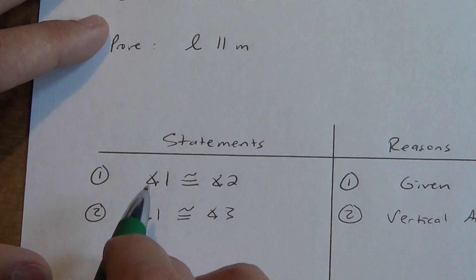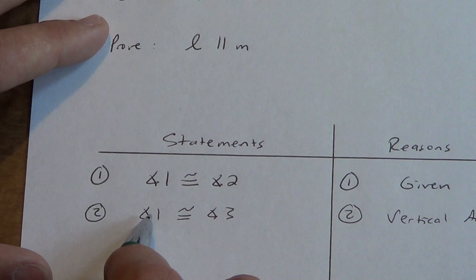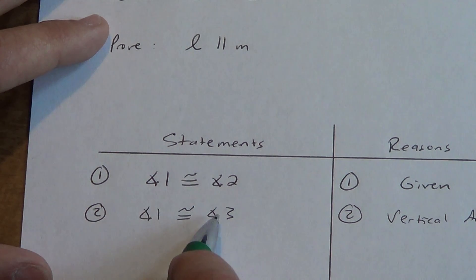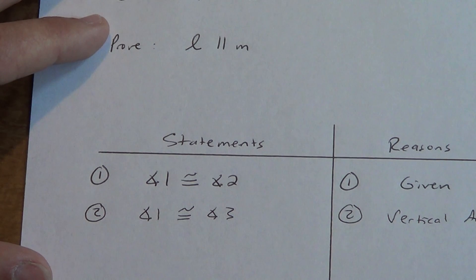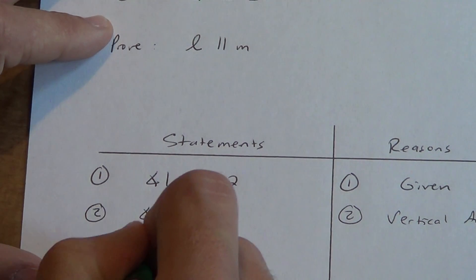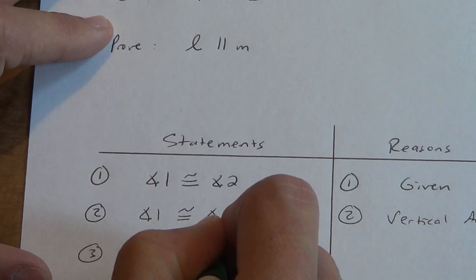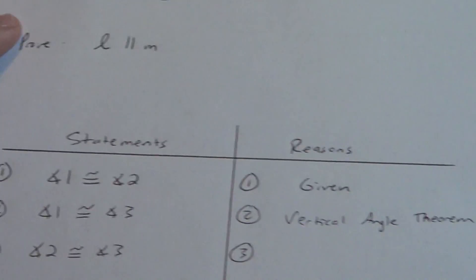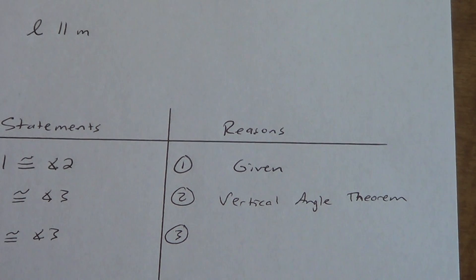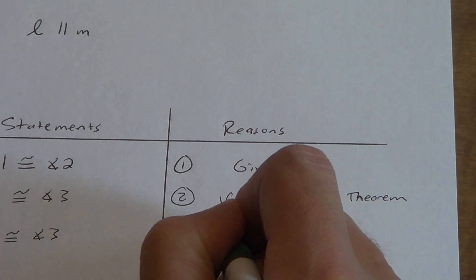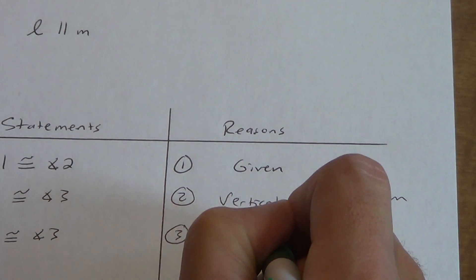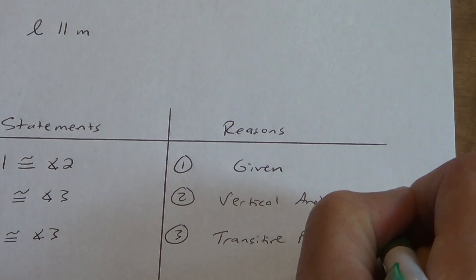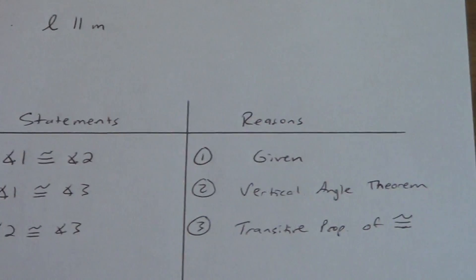You notice we have something repeating. What do we do when something repeats like this? We skip past it and link up angles 2 and 3 together. What is that called when we skip right past angle 1? You guys should remember — if you don't, it's a big deal, you've got to get it memorized. It's the transitive property of congruence.